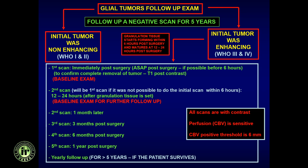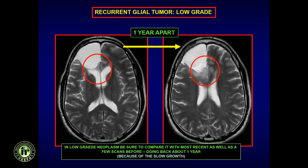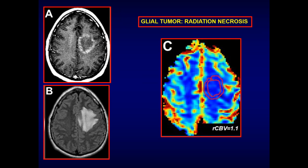Subsequent follow-up for Grade 2-4 enhancing tumors is the same as for Grade 1 — 1, 3, 6, 12 months — unless you see new enhancement, in which case you shorten the follow-up interval. A new punctate area of enhancement at 6 months might prompt a 7-month follow-up rather than waiting a full 6 months. This is a case of a low-grade neoplasm: comparing one year apart, there was no T2 hyperintensity along the margin, and now there is a new area of T2 hyperintensity along the dorsomedial aspect of the surgical cavity — this is recurrent neoplasm. For a high-grade neoplasm, a baseline immediately post-surgery showed some enhancement initially taken as post-treatment; the patient returned and at 3 months enhancement had significantly grown — that is recurrent tumor.